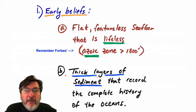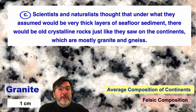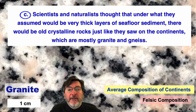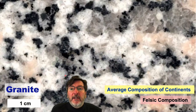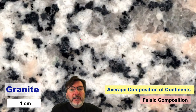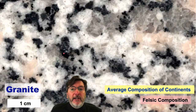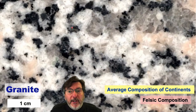Many scientists and naturalists expected that the solid rock underneath the seafloor sediment would be crystalline rock, just like on the continents — things like the igneous rock granite, which is made up of gray glassy quartz, white potassium and sodium plagioclase feldspar, some pink potassium feldspar, and distinctive black minerals — mostly biotite black mica and sometimes hornblende. This is a very silica-, silicon-, oxygen-, sodium-, and aluminum-rich rock with a very interlocking crystal texture.